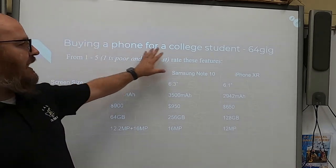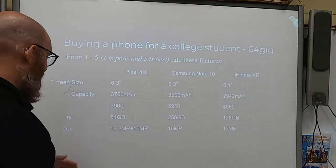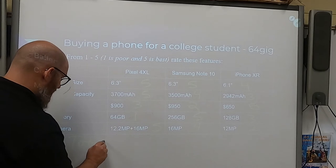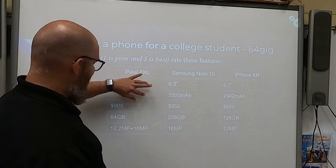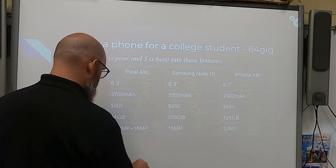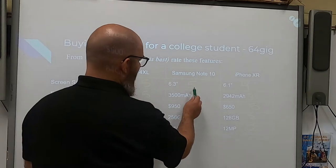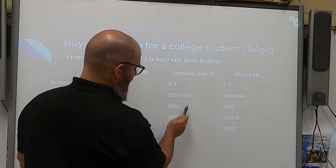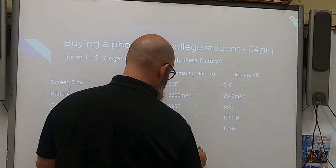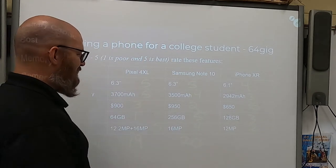So now when you have your options and features rated, all you have to do is add them up for your total at the end. The first phone totals 19. You could have as high as 25. The second phone totals 20. Houston, we have a problem — the most expensive phone wins.